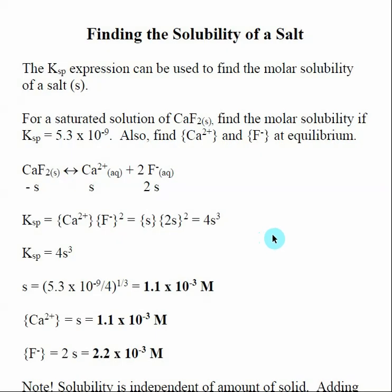What we are going to look at now is finding the solubility of a salt. Given a KSP, we want to be able to find the concentrations of the species involved in a salt at its saturation point or equilibrium. One of the main problems is that these concentrations are going to be related to stoichiometry. For insoluble salts, what we're going to find is what's called the molar solubility, or S.